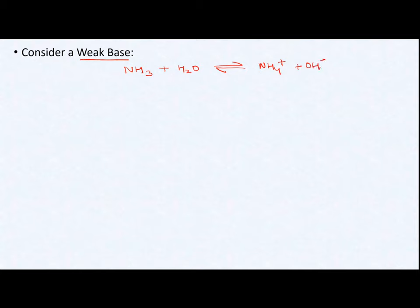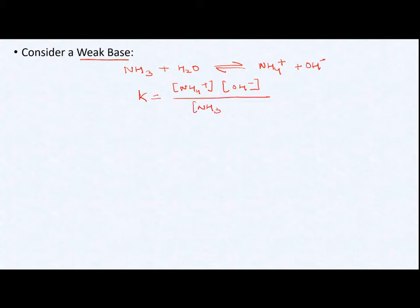For this, if I write the equilibrium constant, that will be equal to the concentration of NH₄⁺ multiplied by OH⁻, divided by NH₃ multiplied by water — just as we wrote for the acid case.